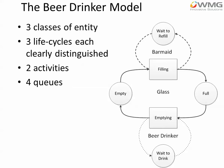In order to fill a glass we need to have both an empty glass and a barmaid waiting to refill, so we will need to have one token at least in each of those two queues in order to trigger the filling activity. You can think of the arrows leading into an activity as being a condition test — in this case it's an AND conjunction. We've also numbered each of the activities, and the numbering has an effect because we will look at filling before emptying. The ordering can sometimes have an effect on the behaviour of a model and the business rules that are applied.